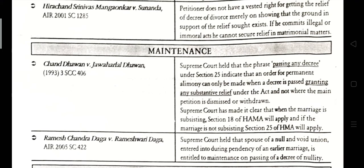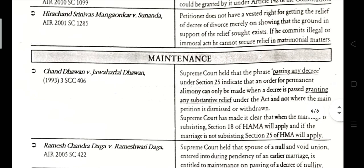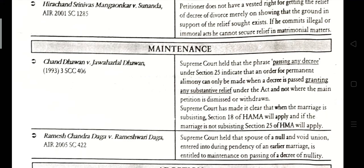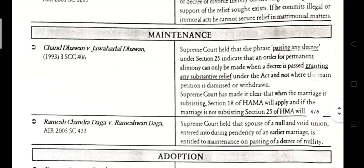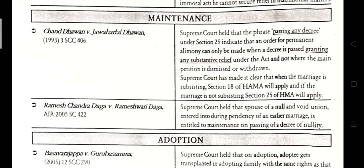Chand Dhawan vs. Jawaharlal Dhawan, 1993, Supreme Court 406. The Supreme Court held that the phrase 'passing any decree' under Section 25 indicates that an order for permanent alimony can only be made when a decree is passed granting any substantive relief under the Act, and not where the main petition is dismissed or withdrawn. Section 18 of the Hindu Marriage Act applies when the marriage is subsisting, and Section 25 applies when the marriage is not subsisting.